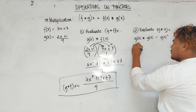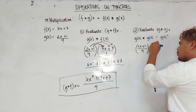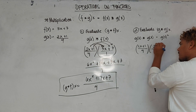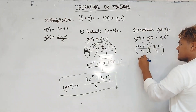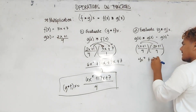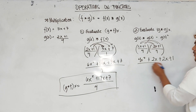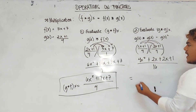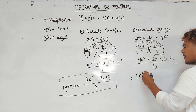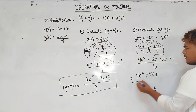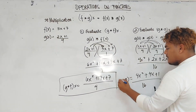That becomes the value of g of x: 2x plus 1 over 4, times 2x plus 1 over 4. 2x times 2x is 4x squared; 2x times 1 is 2x; 1 times 2x is 2x; 1 times 1 is 1, over 4 times 4 which is 16. Combining like terms: 2x plus 2x is 4x. So the final answer is 4x squared plus 4x plus 1 over 16. That is your g times g of x.